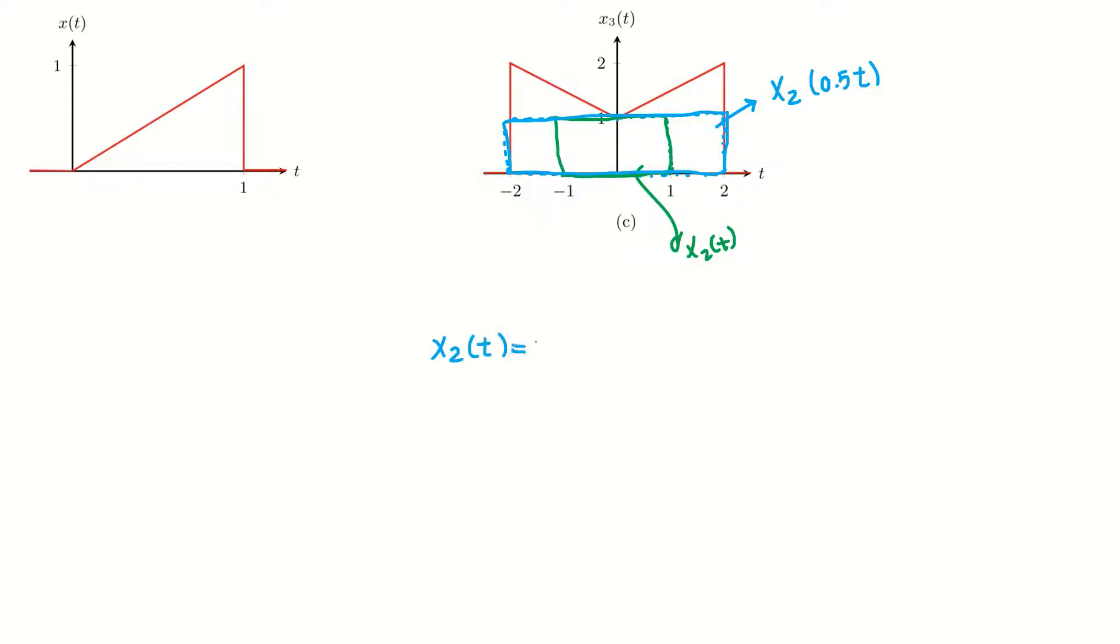Okay. So, well, from the previous part we know X2(t) equals X(t+1) plus X(t-a) plus X(t) plus X(-t). We have that from the previous part. So based on this, I can say, well, X2 of 0.5t equals X of 0.5t—I replace all t by 0.5t—plus 1.